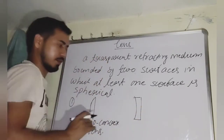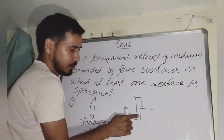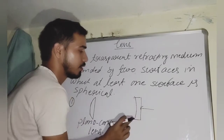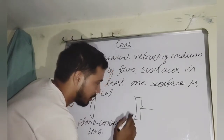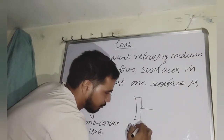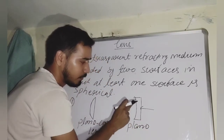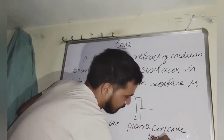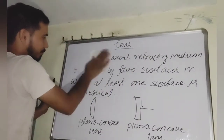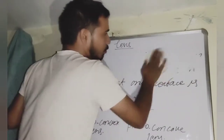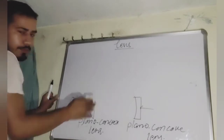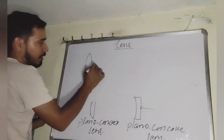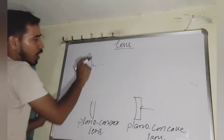When the right surface is plane and the left surface is concave in shape, such a bounded medium is called a plano-concave lens. In the same way, by observing the two boundaries of a lens we can name the lens.